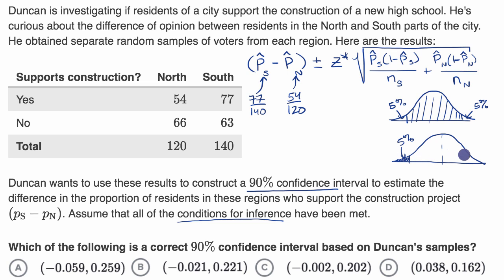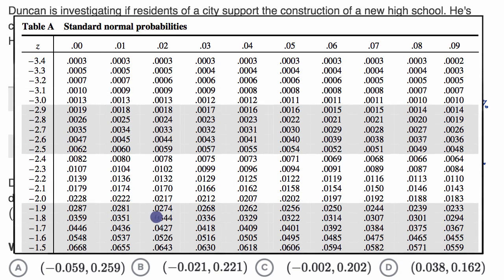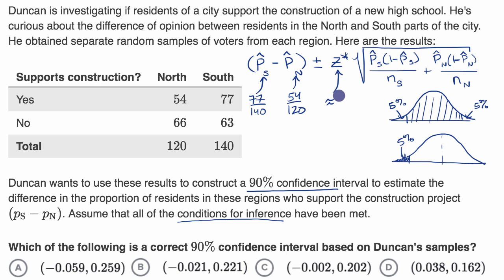That will tell me my critical Z value — how far below or above the mean I need to be. Looking at the Z table: a little over 5%, getting closer to 5%, even closer, then just below 5%. So splitting the difference gives us Z star approximately equal to 1.645. Our sample size in the south is 140 and in the north is 120.